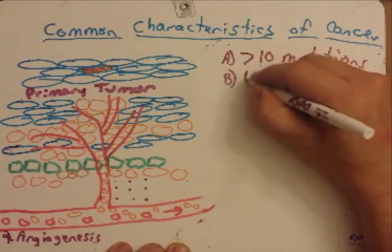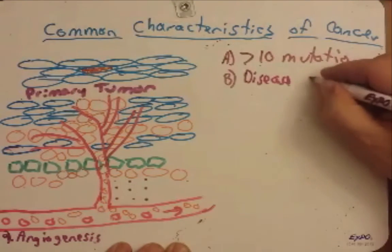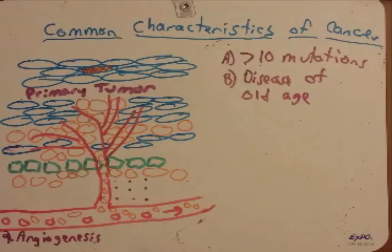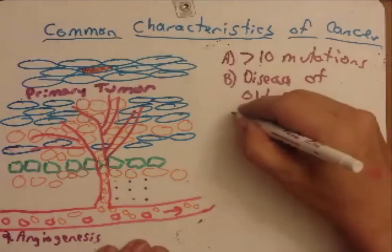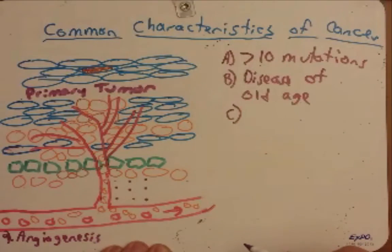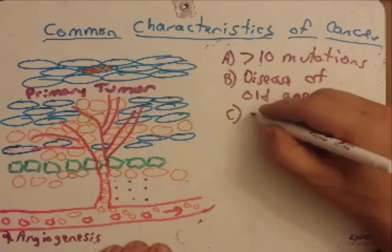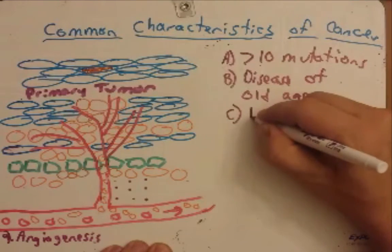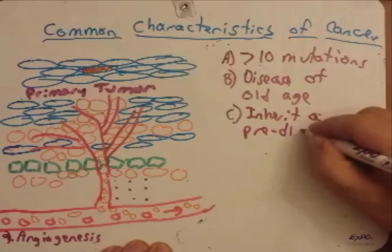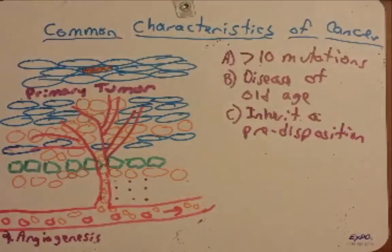this is a disease of old age. Now we all know people who've gotten cancer at a very young age. This of course is not always the case. Sometimes this progression can be sped up because of the ability to inherit a predisposition.